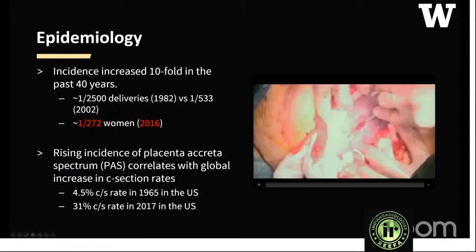The incidence of placenta creta has increased about tenfold in the past 40 years. In 2016, a study using the National Inpatient Sample found that the overall rate of placenta creta in the United States was 1 in 272 women with birth-related hospital discharge diagnoses, higher than any other published study. The rising incidence correlates with the global increase in c-section rates — from 4.5% in 1965 to 31% in 2017.